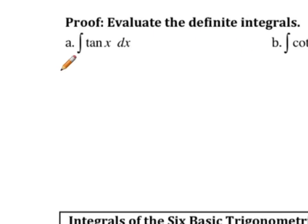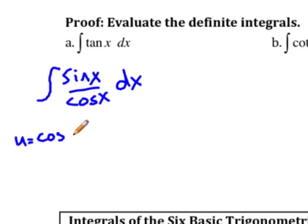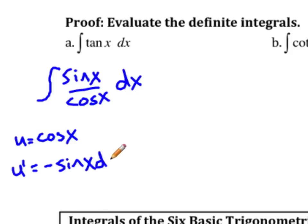For tangent x, the first thing we want to do is change tangent x into sine x over cosine x. So we're going to rewrite this as the integral of sine x over cosine x dx. Now looking at this we have a quotient, so we're going to use u-substitution. We're going to let u equal cosine x, and u' is going to be negative sine x dx.